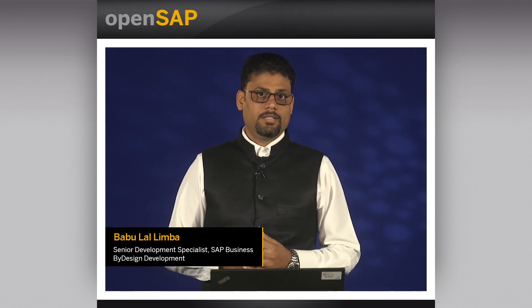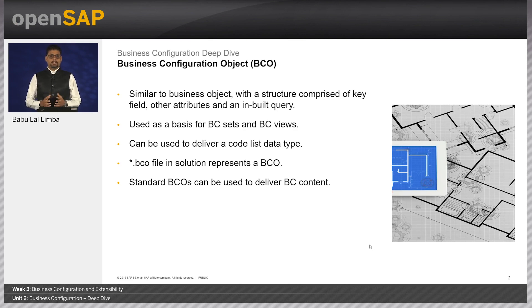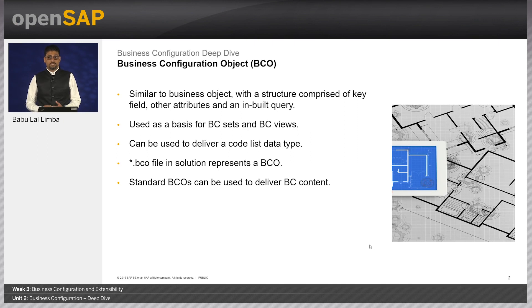Now we will take a deep dive into how to provide such a fine tuning activity. Let us talk about the Business Configuration Object — BCO. A BCO is similar to a business object entity that has a structure comprised of a key, attributes, and a built-in query to read the data stored in the BCO. The object is used as a basis to create business configuration content using business sets delivering predefined contents and BC views enabling users to create additional content on top of what is delivered.